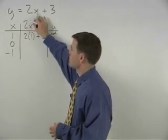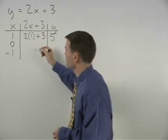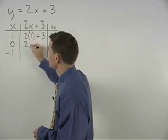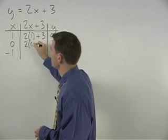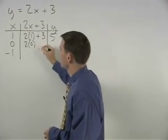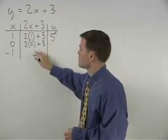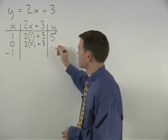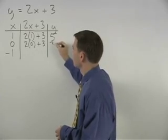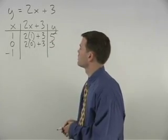Plugging a 0 into the equation for x, we have 2 times 0 plus 3, which is 0 plus 3, or 3.